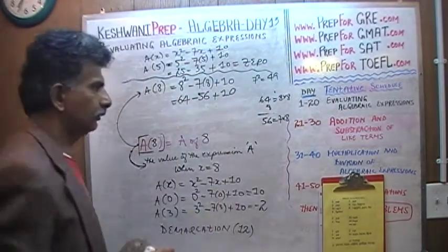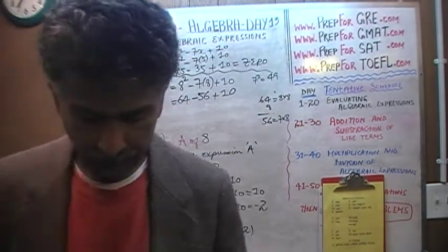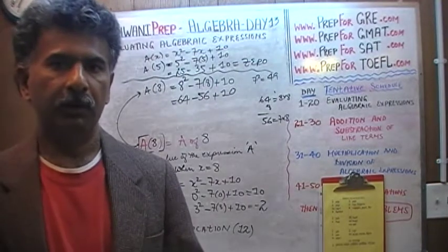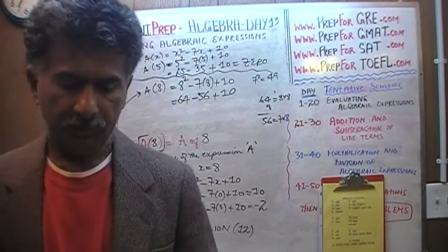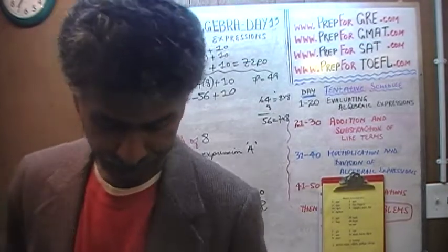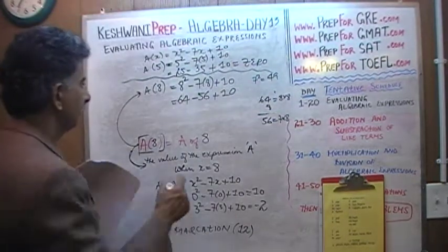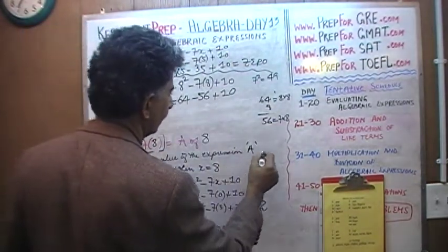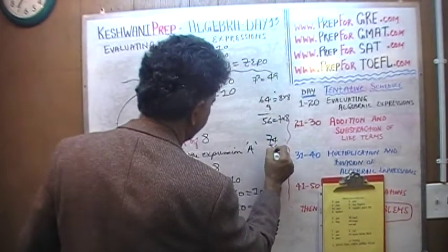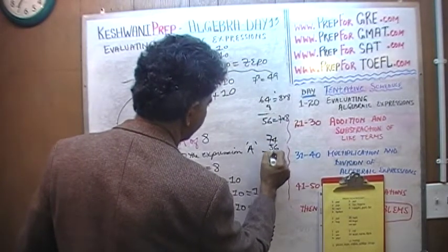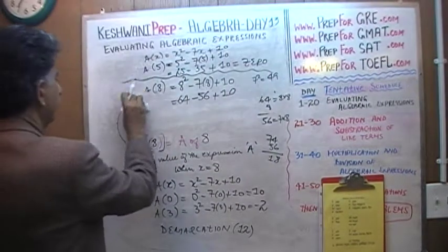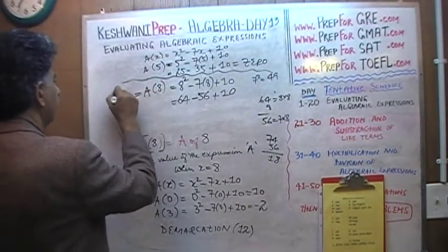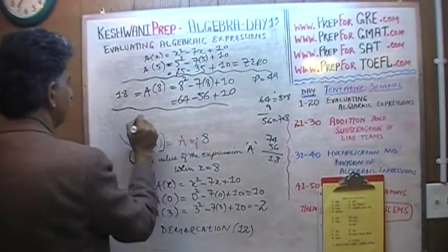Plus 10. Whatever you do, do not pick up the calculator. Leave it alone — you mustn't touch the calculator at all when working with me on these problems. So 64 minus 56 plus 10: that's 74 minus 56. 14 minus 6 is 8, 7 minus 5 is 1 — so that's 18. A(8) equals 18.